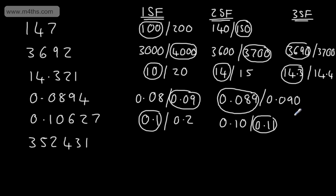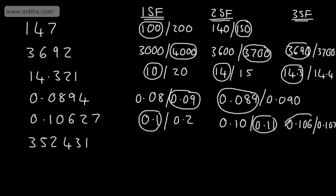If I wanted to go to three significant figures, the choices are 0.106 or 0.107. This is going to be 0.106, as we have a 2 after the six.